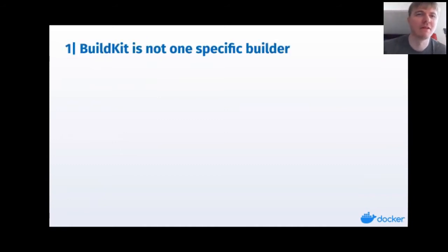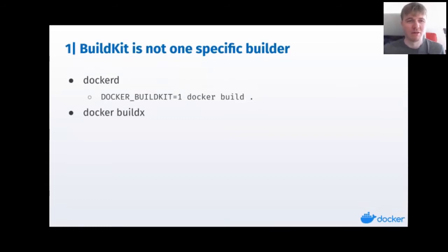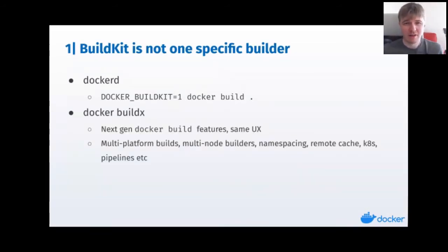The first thing to understand is that BuildKit is not one specific builder — it's rather a collection of components that you can combine to make your build experience. We've embedded BuildKit into the Docker daemon, so if you run Docker build you can execute with the BuildKit stack. We also have the new BuildX command, Docker BuildX, which is the next generation of Docker-branded build features — same flags and things, but with lots of new commands for setting up multi-node builders, namespaces, sharing builders, multi-platform, and building multi-platform images from one machine.